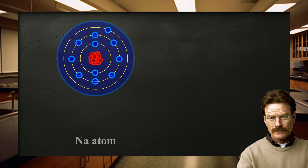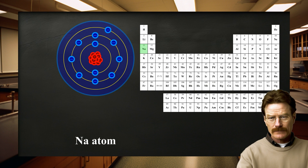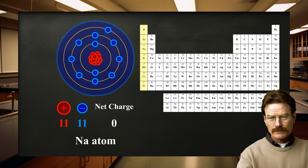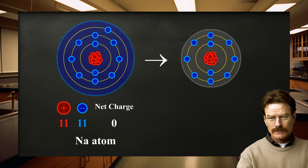Consider the sodium atom, which is located in group 1 in the periodic table. Its atomic number is 11, so it will have 11 protons, which are positively charged, and 11 electrons, which are negatively charged. The sum of the charges is equal to zero, making the sodium atom electrically neutral. Elements in group 1 will easily lose one electron, so sodium will become a cation.